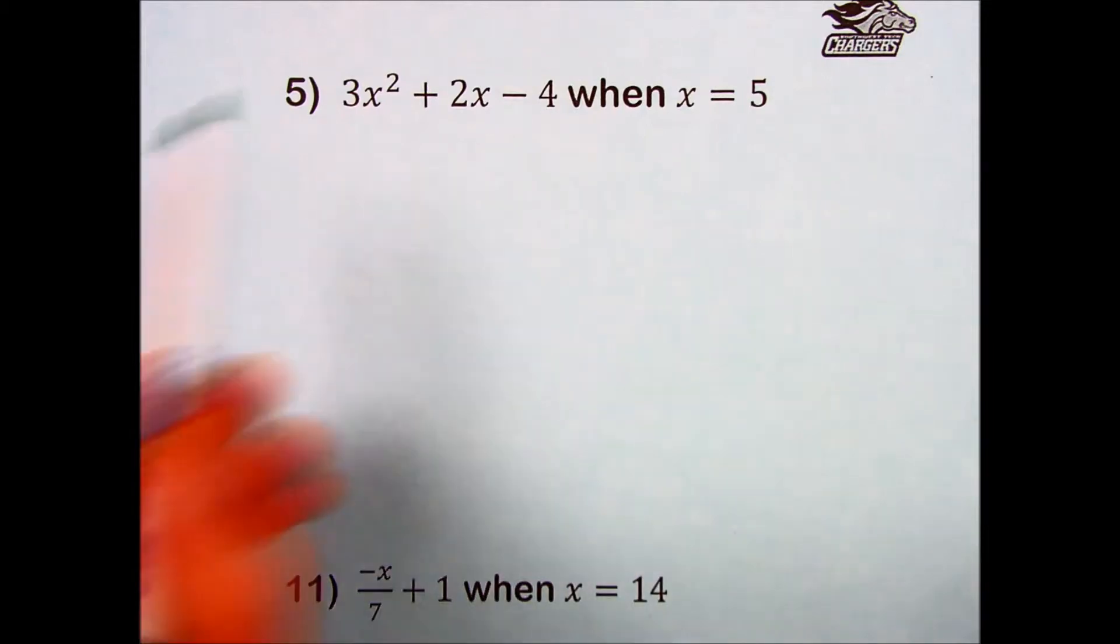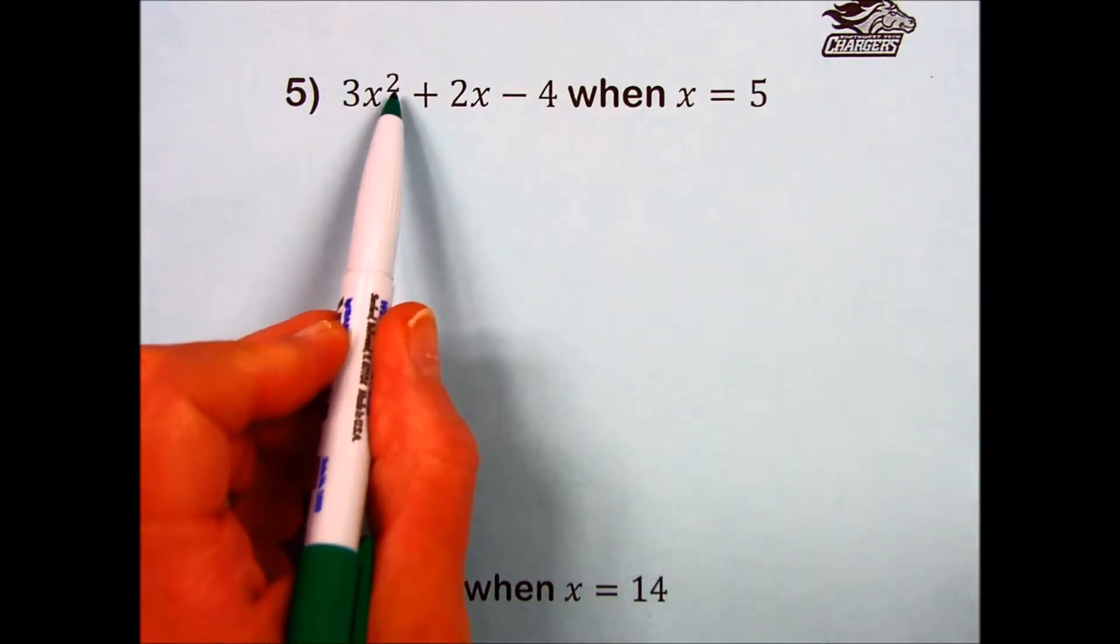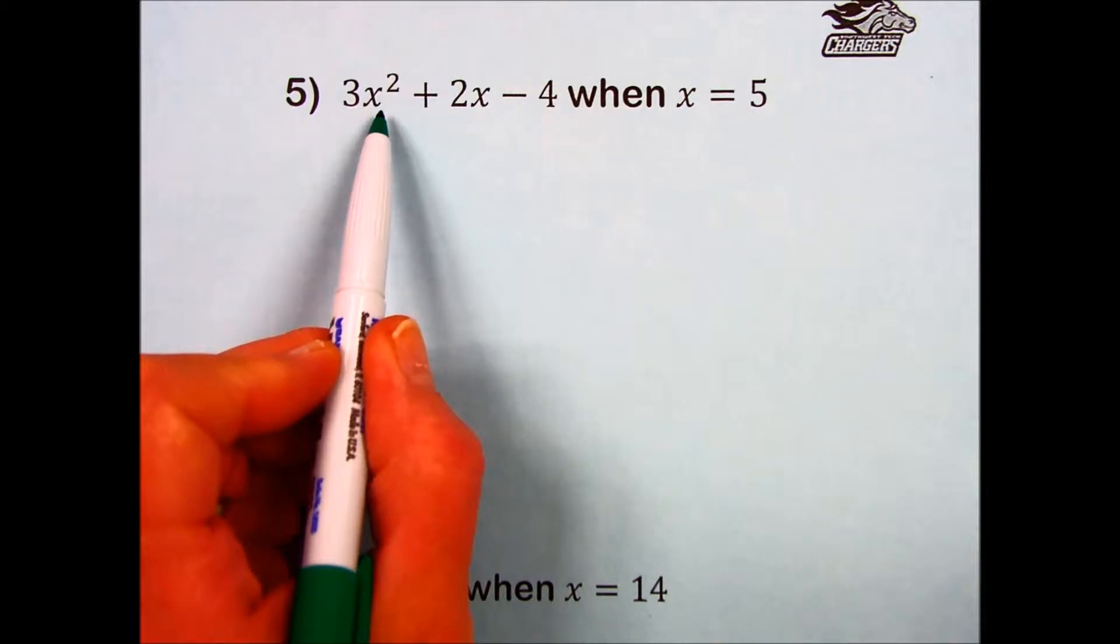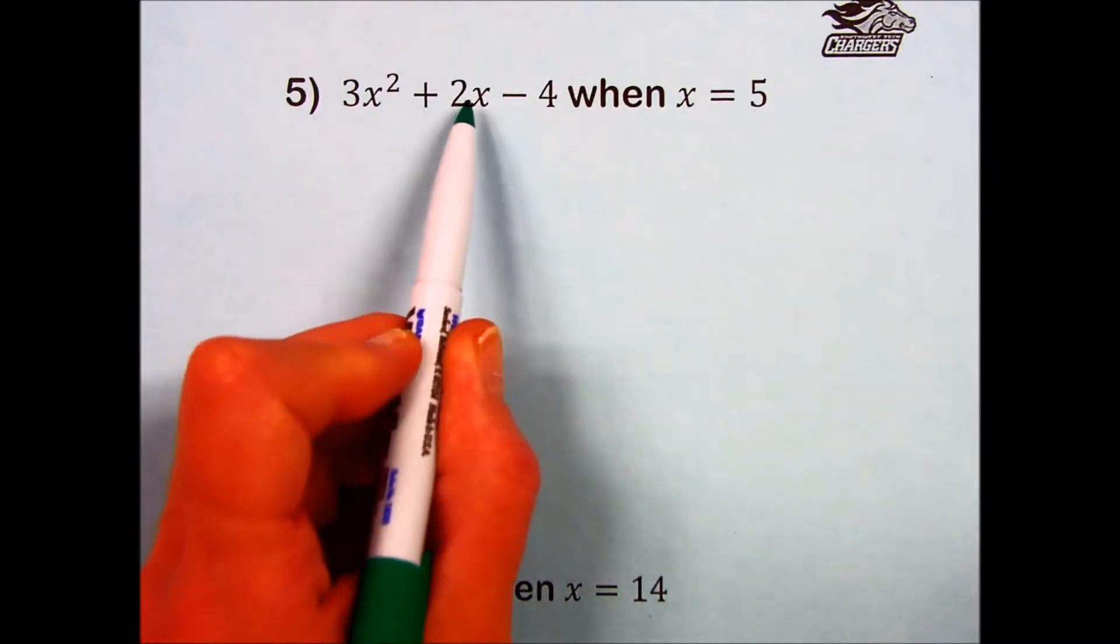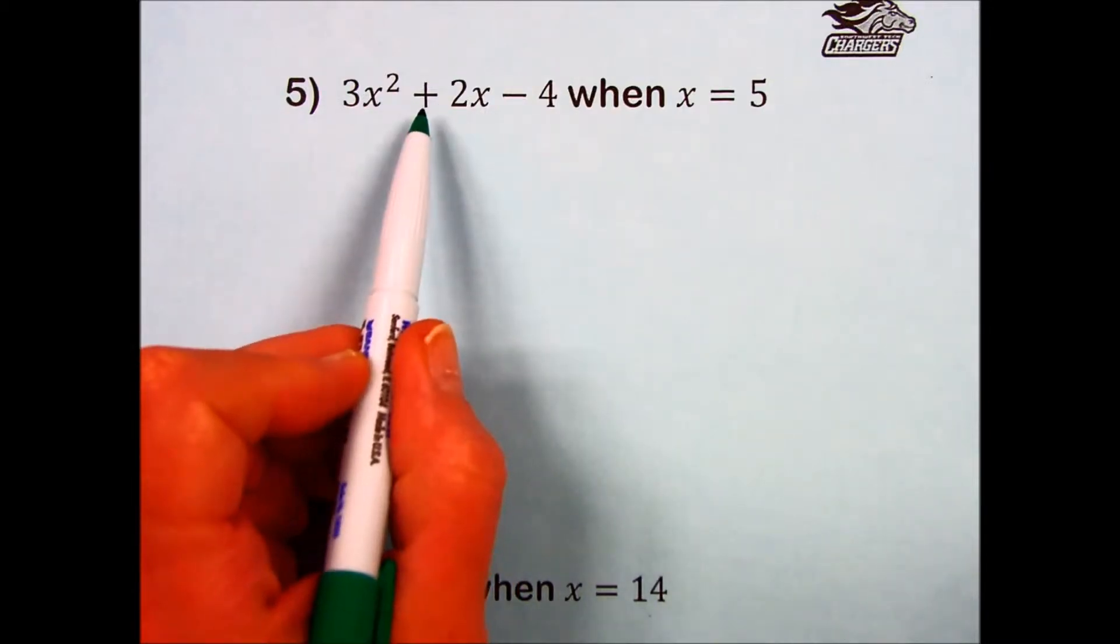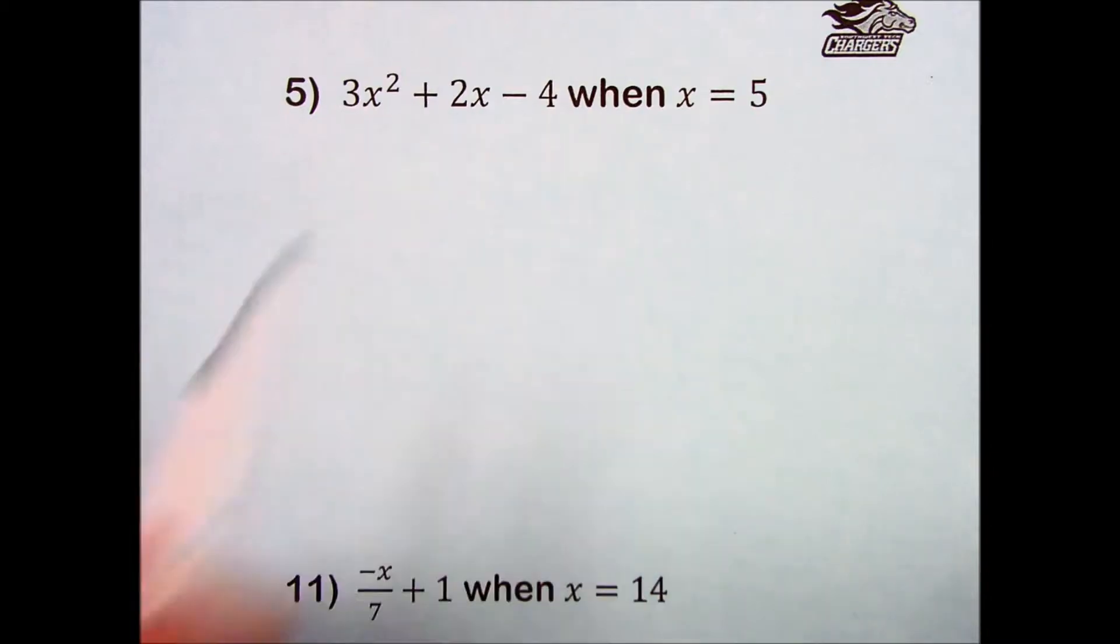The order of operations is going to dictate that we take care of exponential powers first since there are no grouping symbols or parentheses, then take care of the multiplication, and last on the fourth lowest priority in the order of operations is to do any addition subtraction as they come left to right.